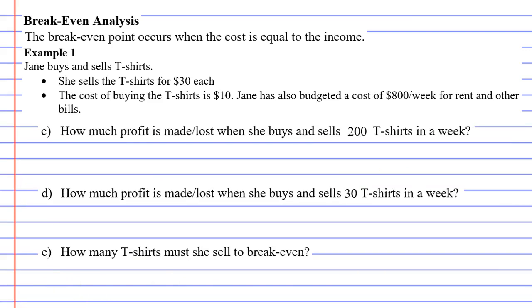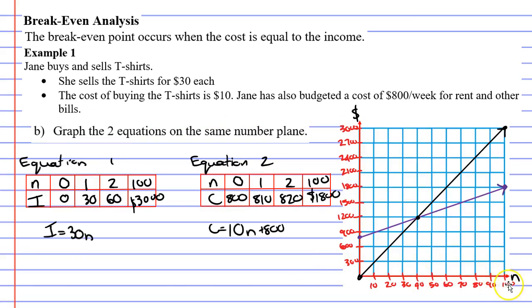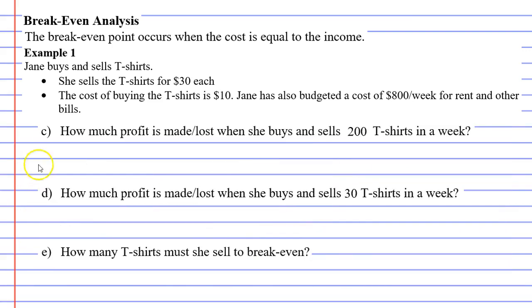Let's now move on to the next slide. We're doing questions C, D, and E. Question C says, how much profit is made or lost when she buys and sells 200 t-shirts in a week? Now, if we look at the graph, we only go as high as 100. But that's okay. If the graph's not going to work, we can use our equations. So I'm just going to copy both of them down and use them to find the income and the cost when you sell 200 t-shirts.